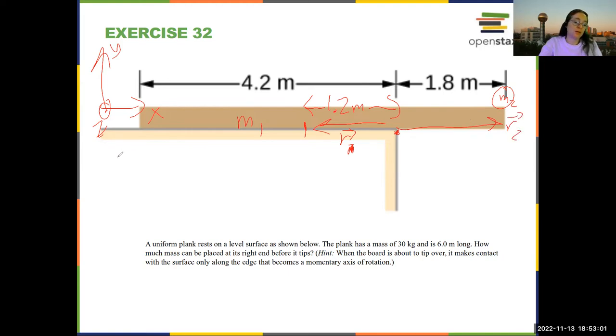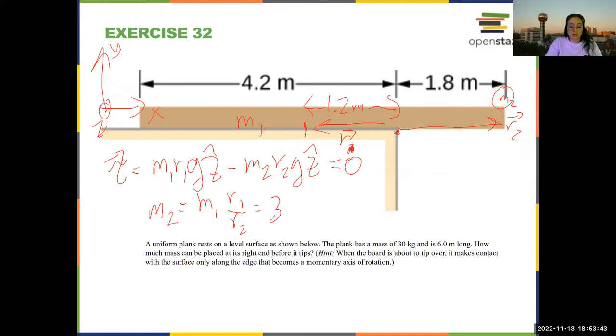So we have the net torque is m1 r1 g positive z hat minus m2 r2 g z hat. And this is equal to zero so we can solve for the second mass m2 equals m1 r1 over r2 which is 30 kilograms times 1.2 over 1.8. This is equal to two thirds so you can put 20 kilograms on that.